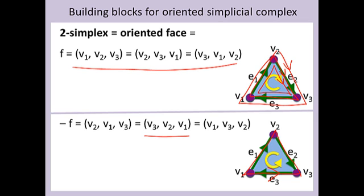Two triples correspond to the same orientation if one is an even permutation of the other. If I perform an odd number of permutations, I get a face with the opposite orientation. For example, if I permute v1 and v2, then I go from a clockwise orientation to a counterclockwise orientation — from v1, v2, v3 to v2, v1, v3. So I have reversed the orientation when I permute two elements that are next to each other.